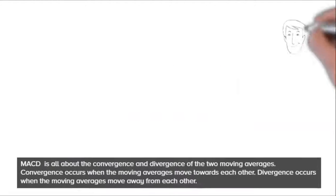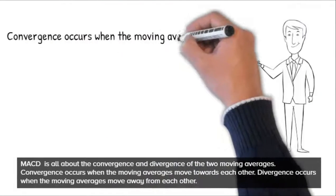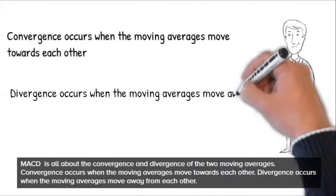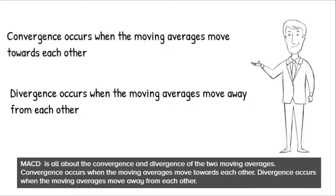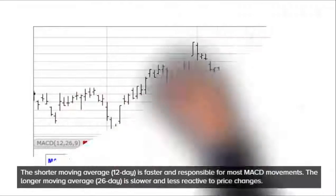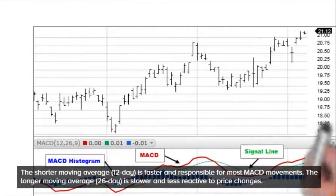MACD is all about the convergence and divergence of the two moving averages. Convergence occurs when the moving averages move towards each other. Divergence occurs when the moving averages move away from each other. The shorter moving average, the 12-day, is faster and responsible for most MACD movements. The longer moving average, the 26-day, is slower and less reactive to price changes.